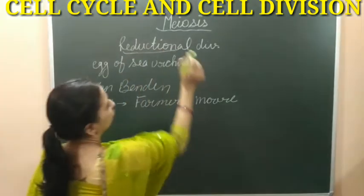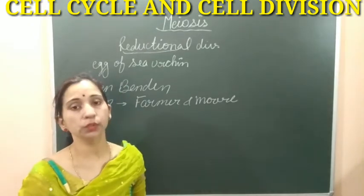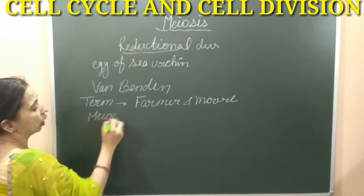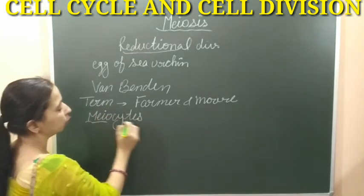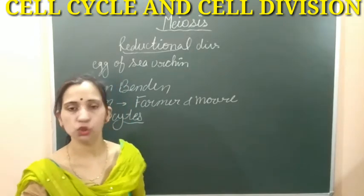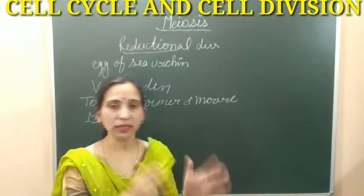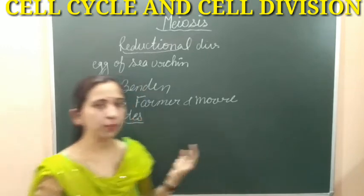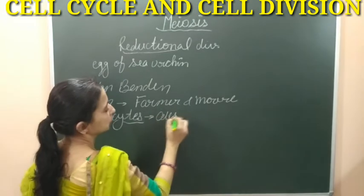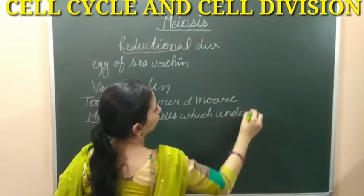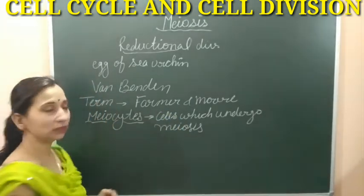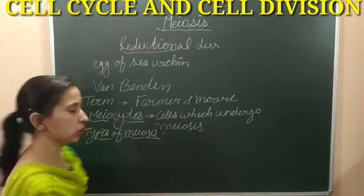Now, the cells which undergo meiosis are known as meocytes. Meocytes are the cells which are going through meiosis. In the case of animals, they have germ cells which are diploid in number, and these germ cells do the meiosis by which they form haploid gametes. These gametes then fuse together to form a diploid zygote. So the cells which do the meiosis are known as meocytes.